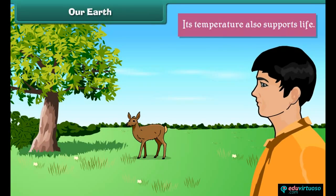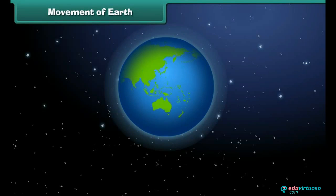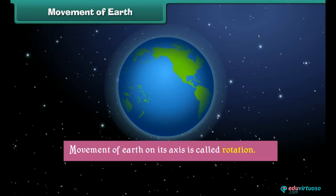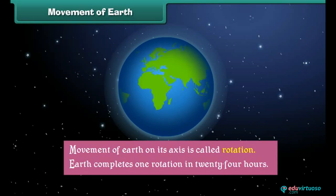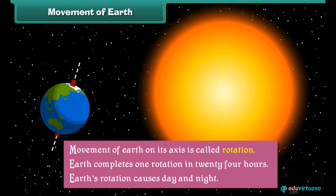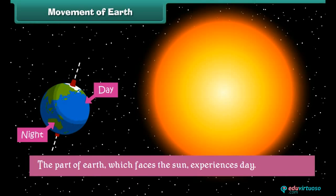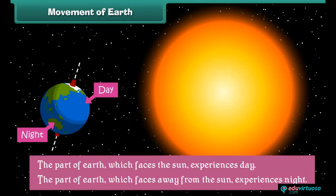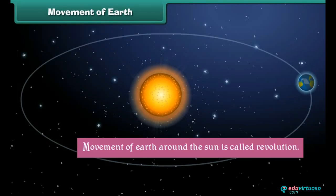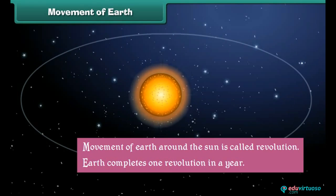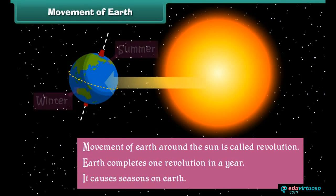Movement of Earth: Earth shows two types of movement. Movement of Earth on its axis is called rotation. Earth completes one rotation in 24 hours, and this rotation causes day and night. The part of Earth which faces the Sun experiences day, while the part facing away from the Sun experiences night. Movement of Earth around the Sun is called revolution. Earth completes one revolution in a year, and it causes seasons on Earth.